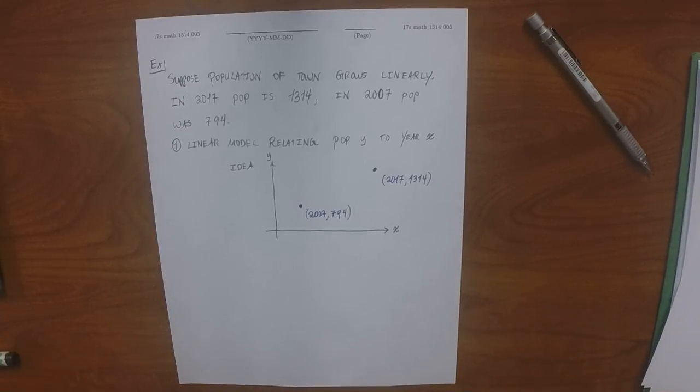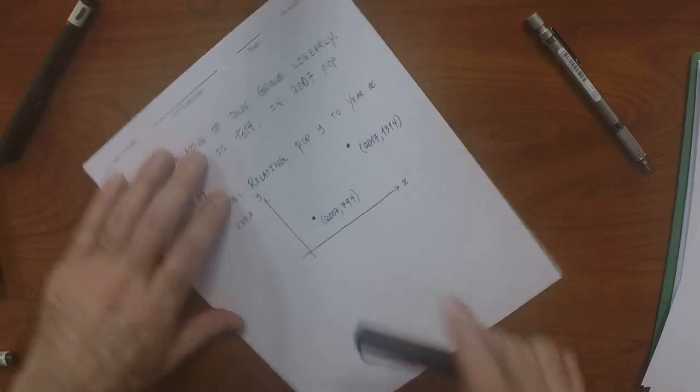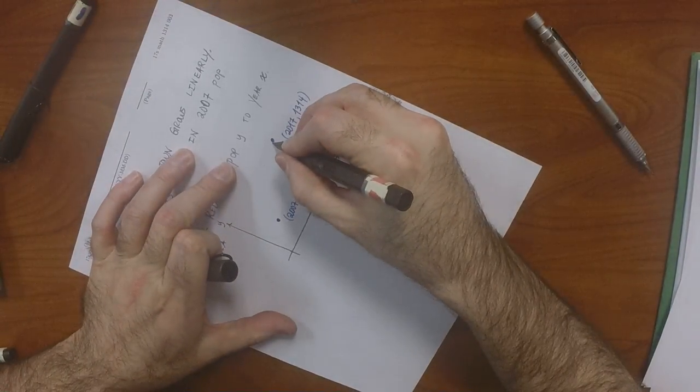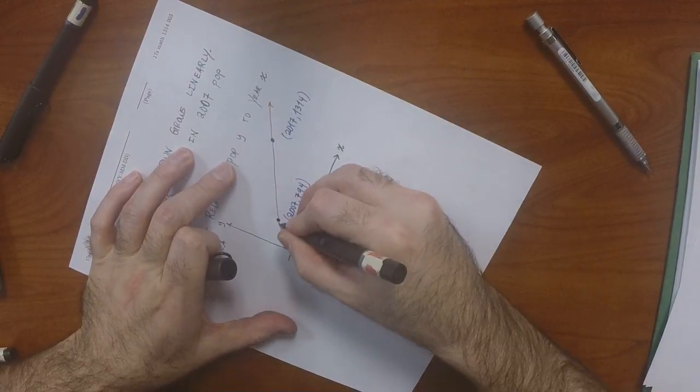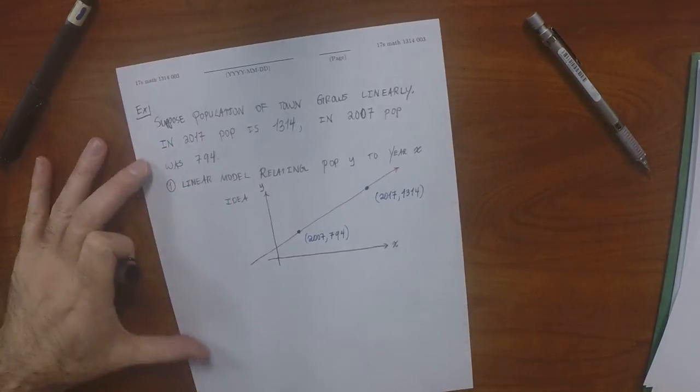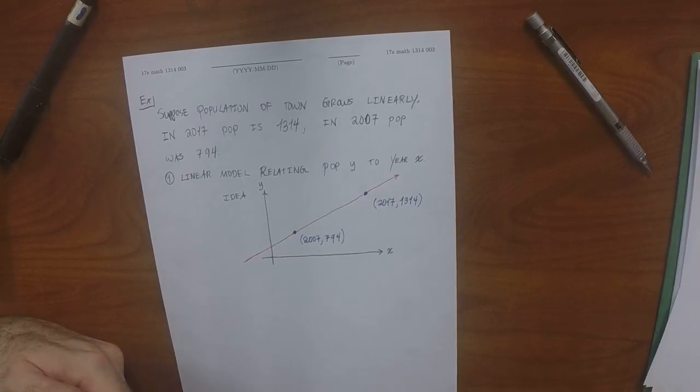So, what are the coordinates of this point? 2007, 794. And what is the, what are the coordinates of the other one? 2017, 1314. Okay. So, now, the very first sentence says that the population grows linearly. Okay. So, that means that at any point in time, the population has to fall on the line that's passing through those two points. That's what that means. So, we could draw this line.